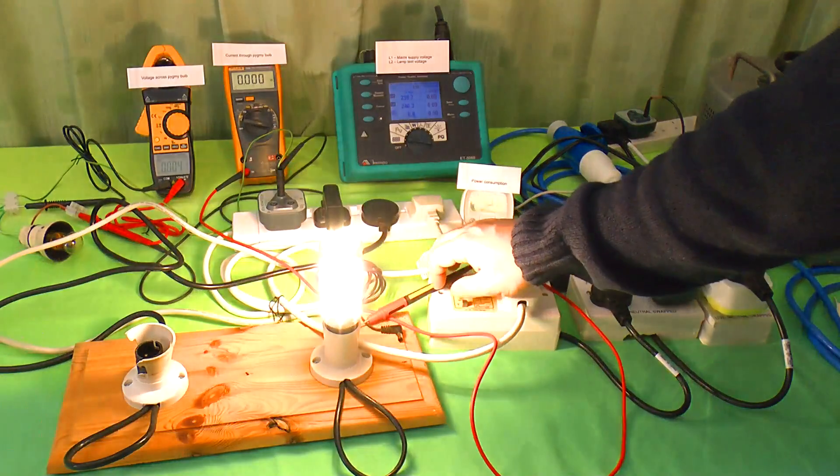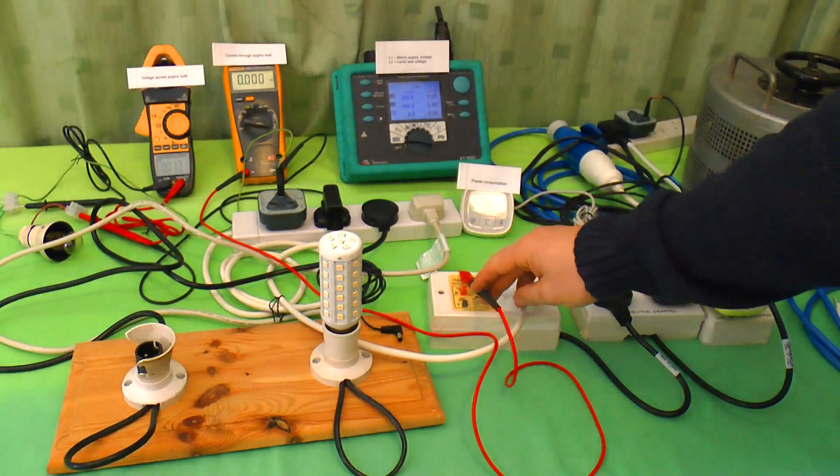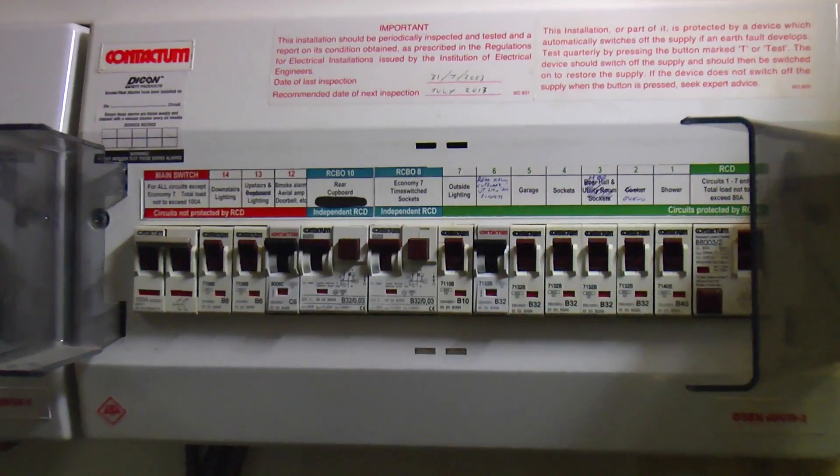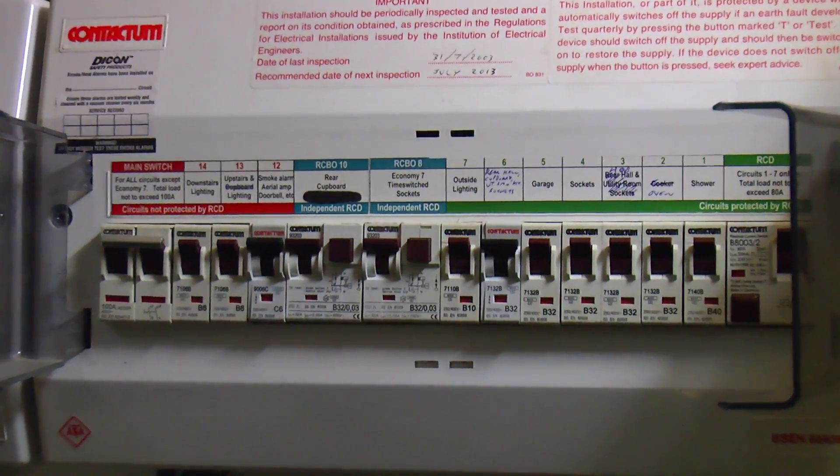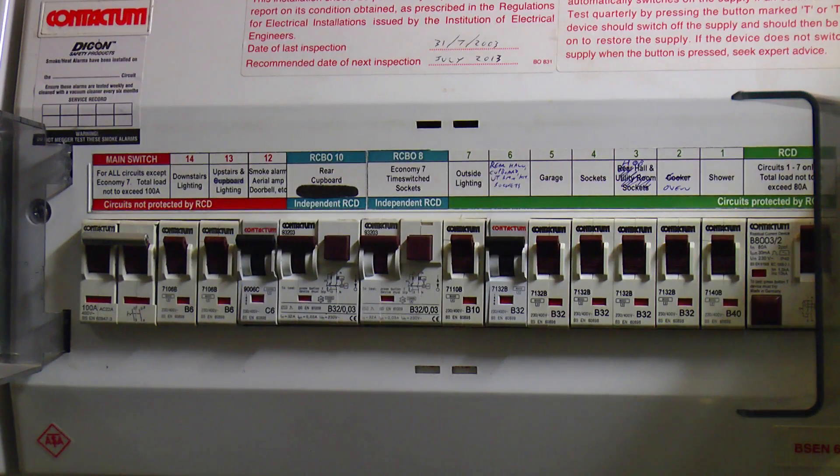So touching one of these lamps while switched on will trigger the RCD and cut the power to limit the severity of an electric shock. But what if there isn't an RCD? Many homes have no RCD protection on the lighting circuit so that a faulty appliance that trips the RCD doesn't plunge the whole place into darkness.